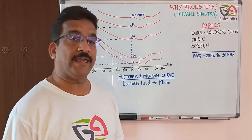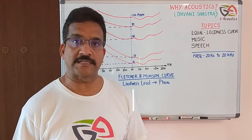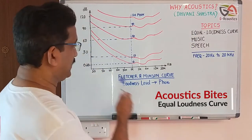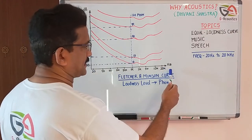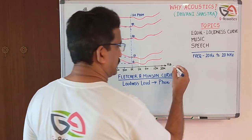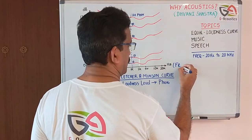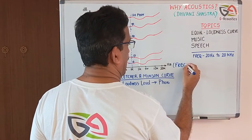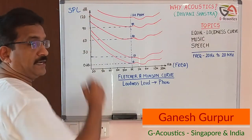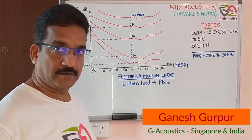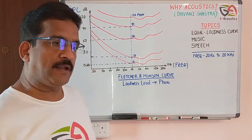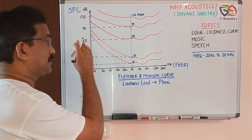Coming to the first topic: the equal loudness curve. As usual, we see a graph. The X axis is frequency, which is in Hertz — audio frequency — and the Y axis is the sound pressure level, which is in decibels. There are two aspects: sound pressure level is a physical entity which can be measured, while loudness is subjective.